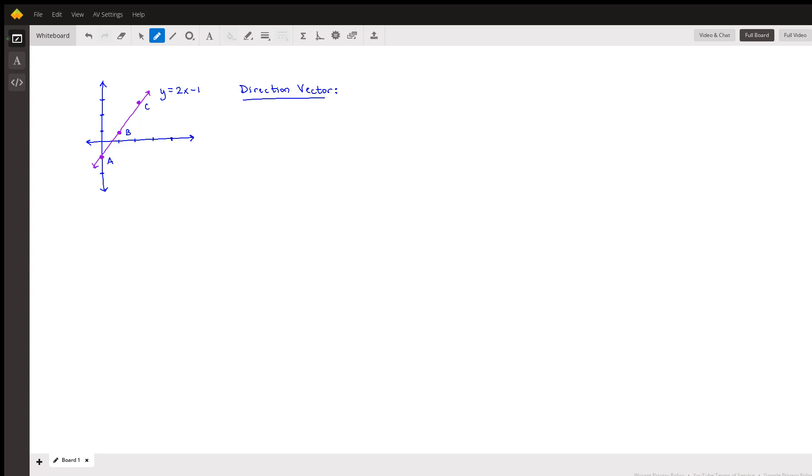So to find the direction vector, which I will call v, this is basically a vector that points in the same direction as the line, and you can draw a vector in any position along the line because it doesn't really change its direction and doesn't really change its orientation.